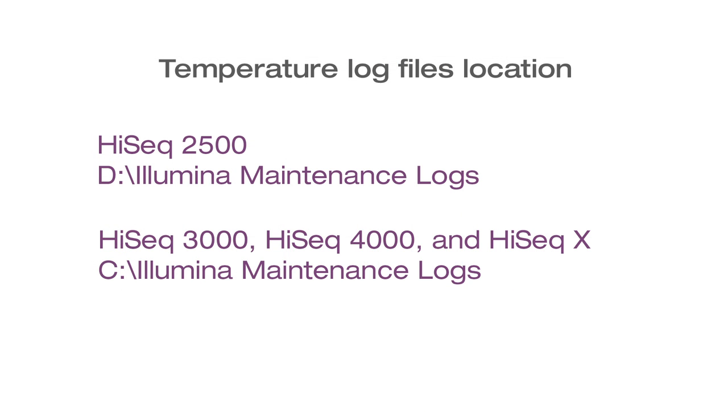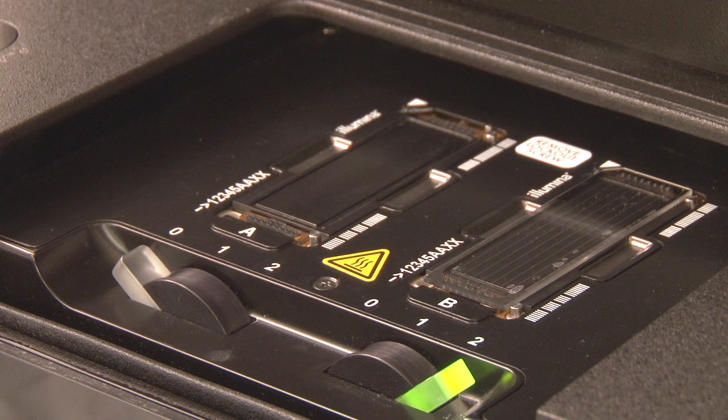The temperature log file can be found here. Now let's take a look at the flow cell stage. This metal surface is heated and cooled during the sequencing run, as required by the SBS chemistry.